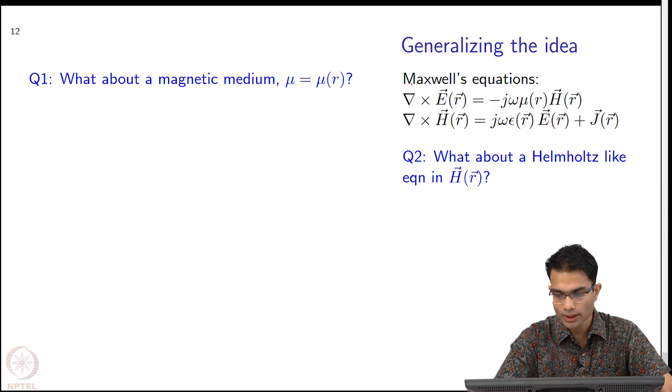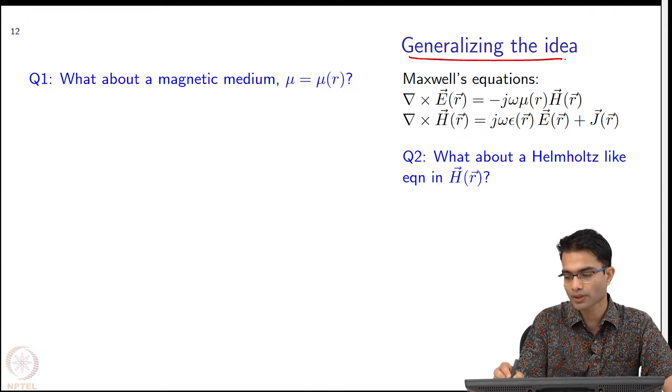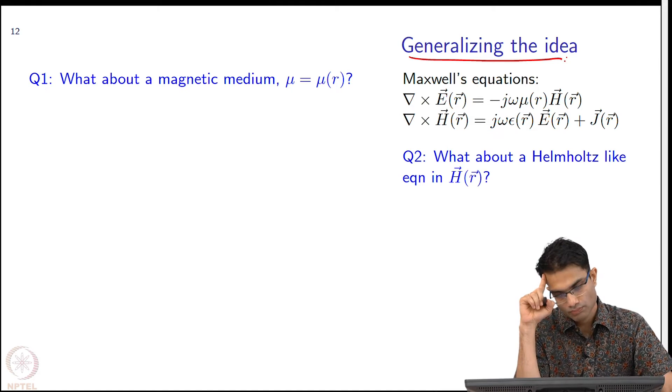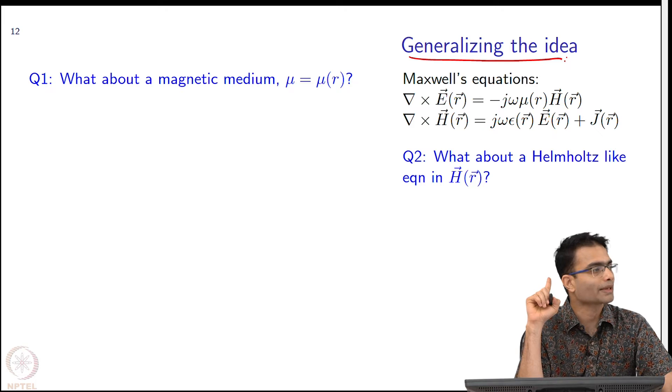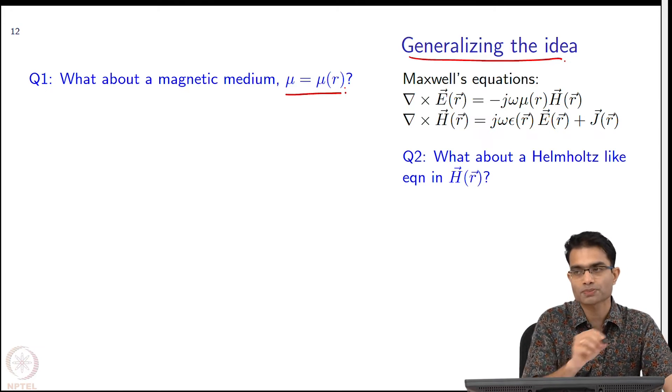So, to conclude this module I just have one final set of observations to generalize what we have done so far. First question is what if the medium was magnetic, that is if mu was a function of space also.